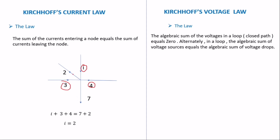The incoming currents should equal the ones going out. The current moving out of the node gives us I equals 2 amps. This is mostly applied when a question asks you to distribute current — you use this principle to solve for KCL. With Kirchhoff's voltage law, the algebraic sum of voltage in a closed loop is zero. Alternatively stated: the algebraic sum of voltage sources equals the algebraic sum of the voltage drops.